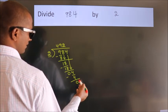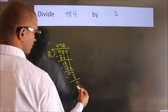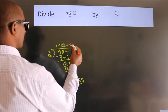After this, no more numbers to bring it down. So we stop here. This is our remainder. This is our quotient.